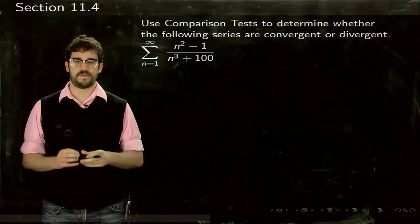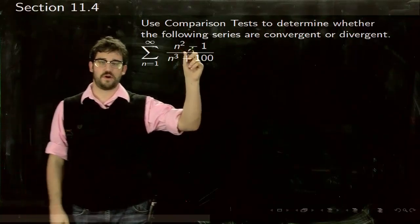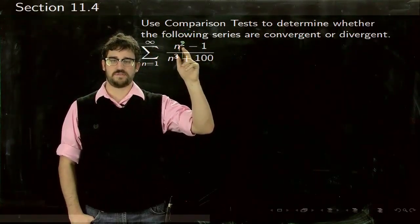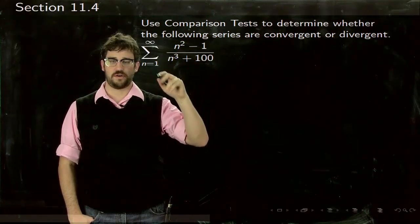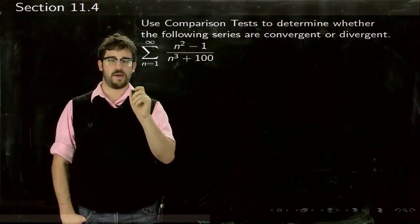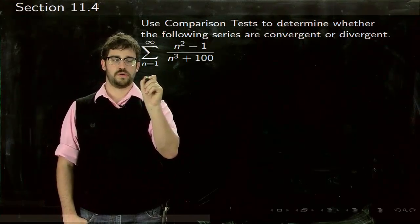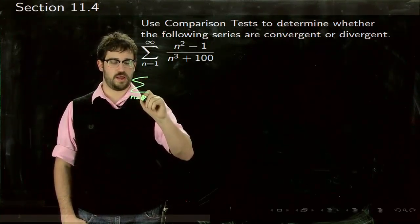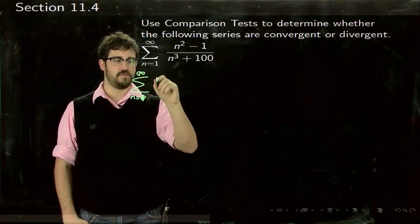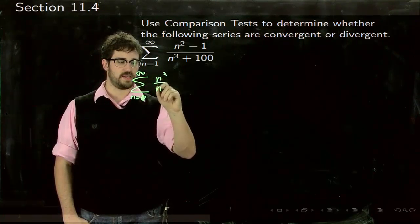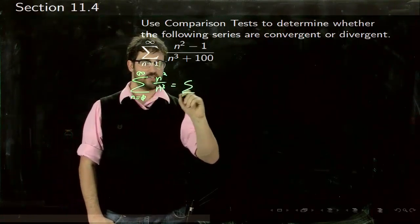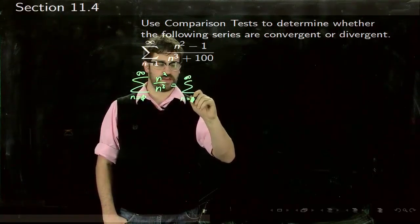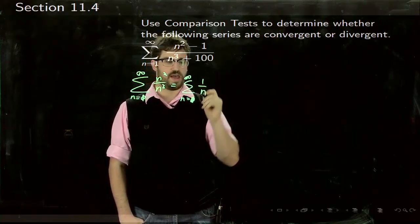The largest degree in the numerator is degree 2 and the largest degree in the denominator is degree 3, so I want to compare it to the series from n = 1 to infinity of n²/n³, which is in other words just the series from n = 1 to infinity of 1/n.